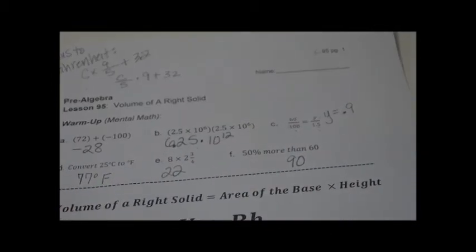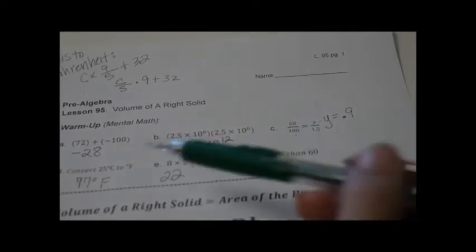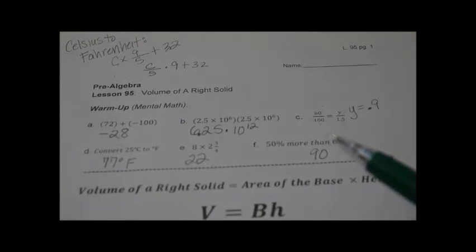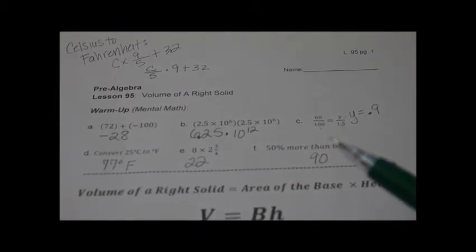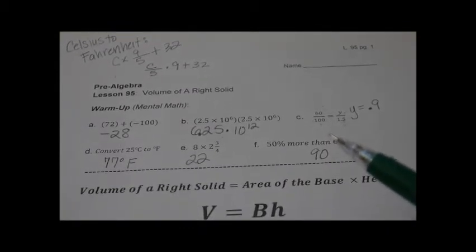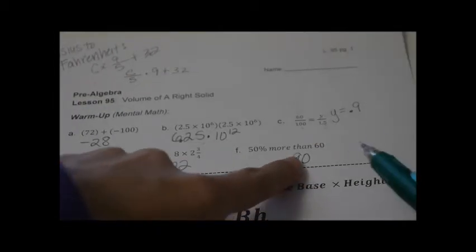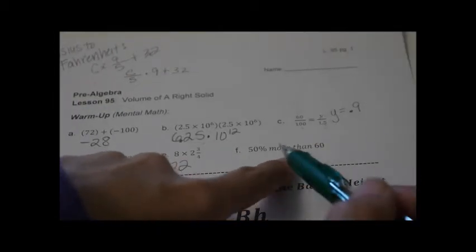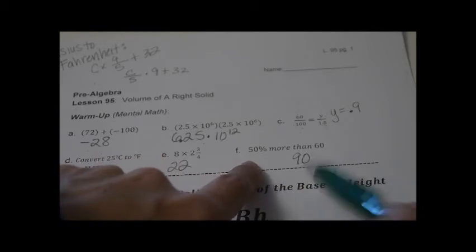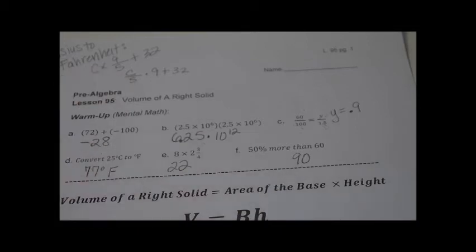8 times 2 and 3 fourths: 8 times 2 is 16, and 3 fourths of 8 is 6, so it's 16 plus 6. For 50% more than 60: 50% of 60 is 30, so 30 more than 60 is 90. That's how we do those.